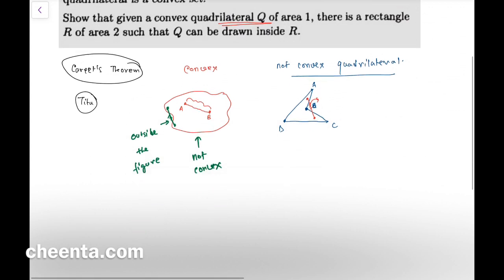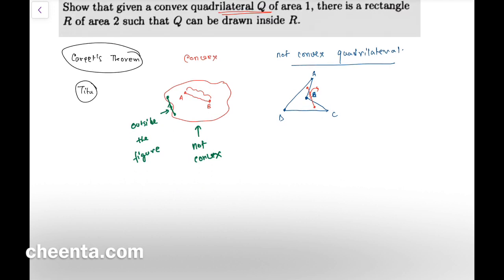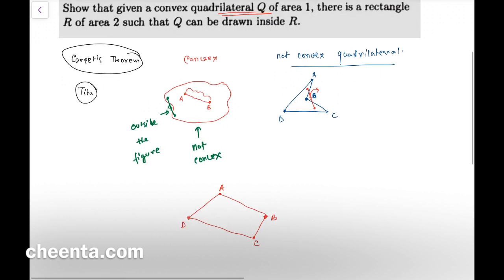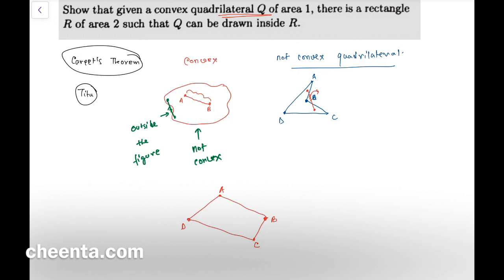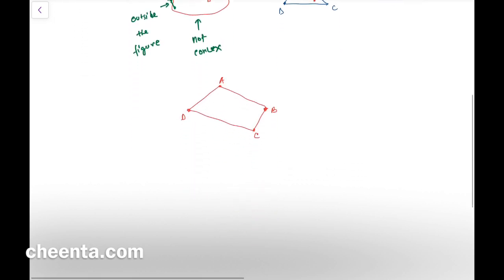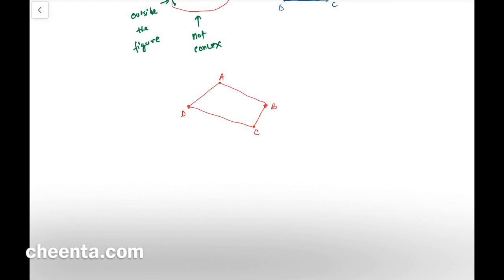Anyway, we have a convex quadrilateral Q of area one. So let's draw an arbitrary quadrilateral, something like this, maybe A, B, C, D. And it's given that the area of the quadrilateral is one.